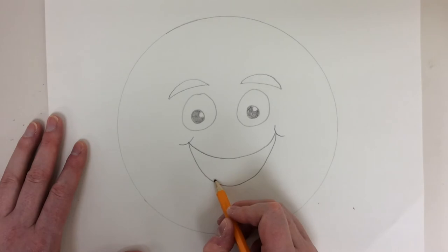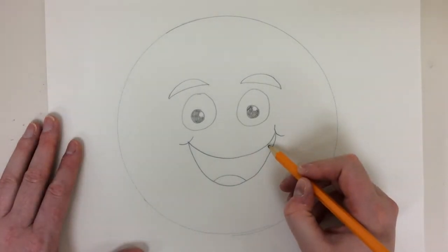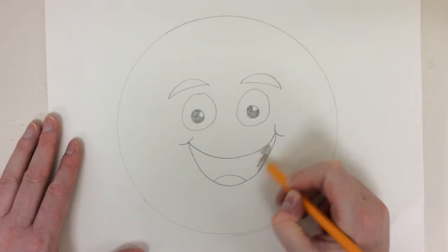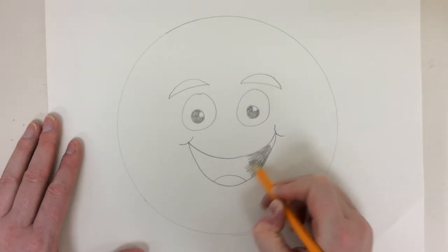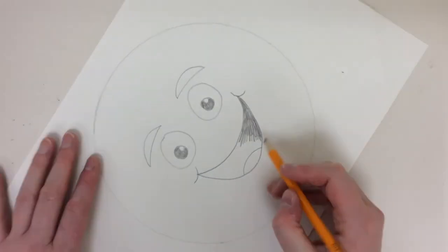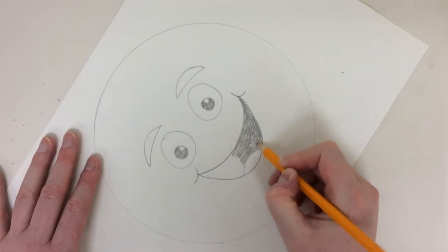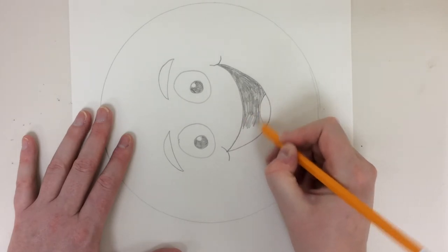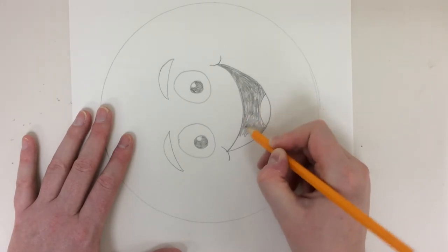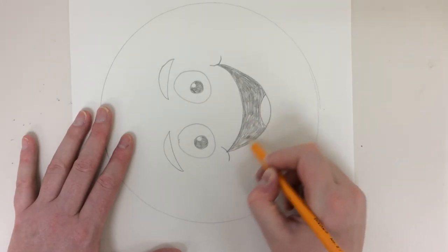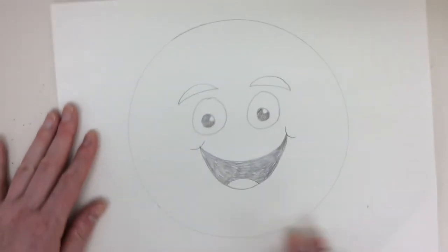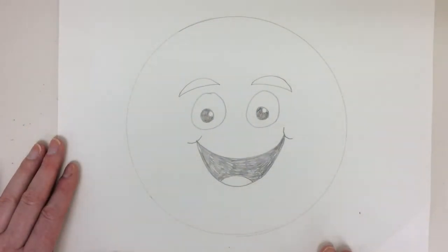And the last thing I'm going to do is I'm going to make a little tongue in here for him and color in the inside. All right. Now I've got his face on there.